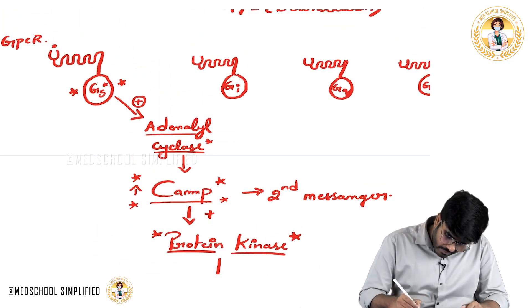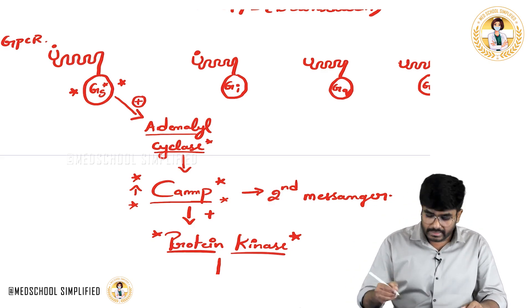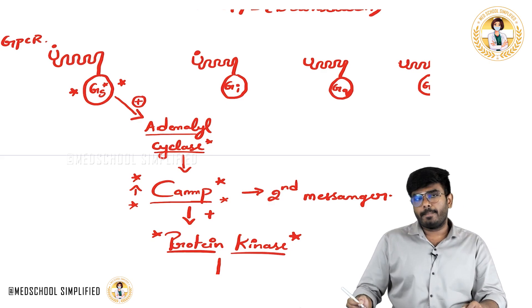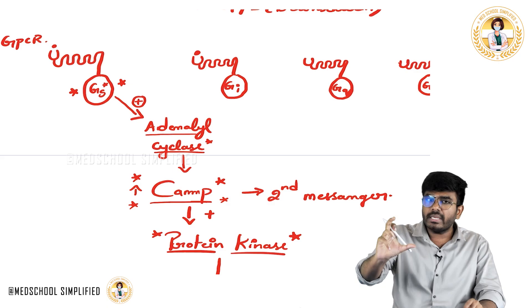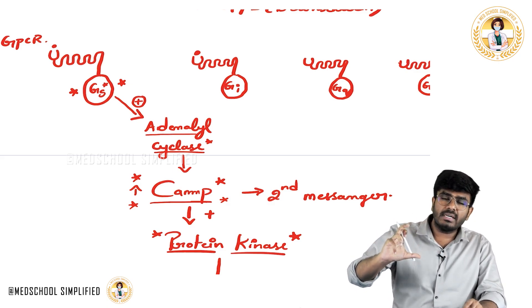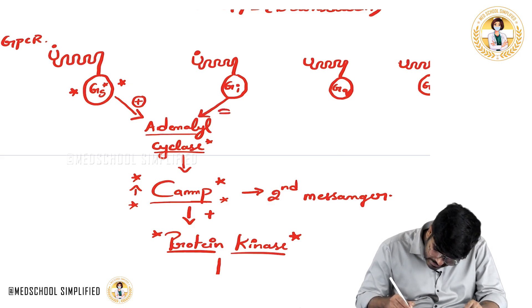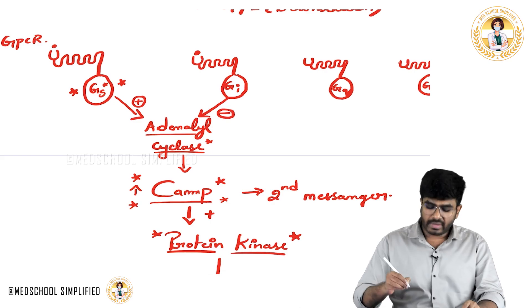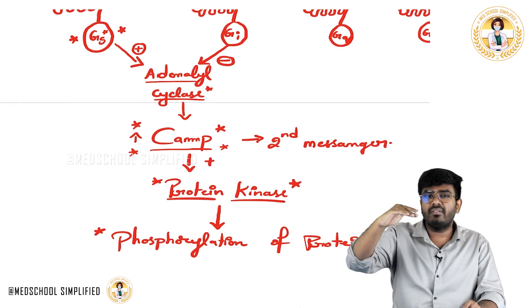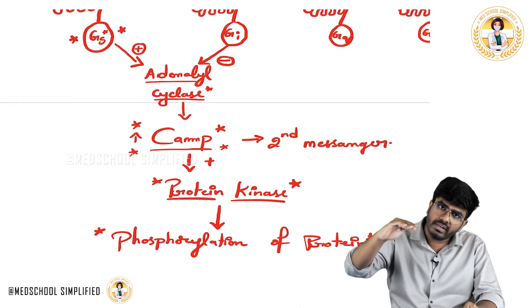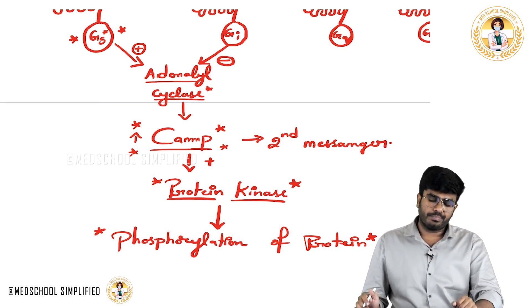When you stimulate the other type of GPCR where the intracellular domain is G-inhibitory, the alpha inhibitory component moves away and uses energy to inhibit adenylyl cyclase. When adenylyl cyclase is inhibited, cAMP levels go down, protein kinase activity goes down, phosphorylation of proteins inside the cell goes down, and the cell becomes inactive.